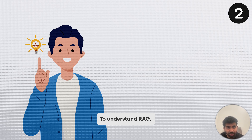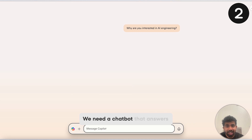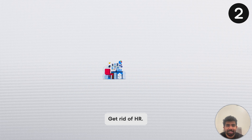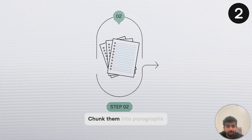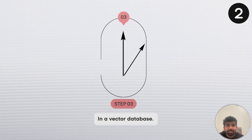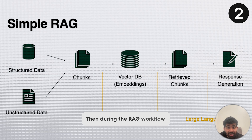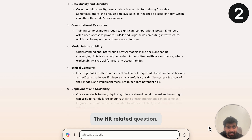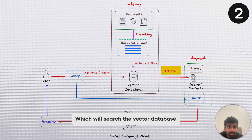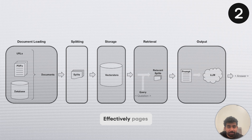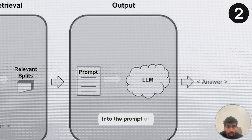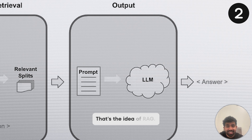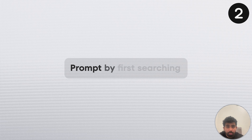Let's go over a quick example to understand RAG. Let's say we need a chatbot that answers HR questions in a company. The first step is called chunking — you take all of the HR documents, chunk them into paragraphs or pages, and store them in a vector database. During the RAG workflow, whenever someone asks an HR-related question, a retriever model will search the vector database for relevant chunks that could help answer the question — effectively pages from the original document. These relevant chunks are then pasted into the prompt or context for the LLM, which can sift through this long context and concisely answer the question. That's the idea of RAG: add more context to the LLM prompt by searching a vector database.